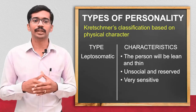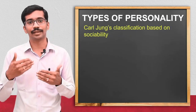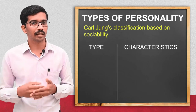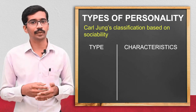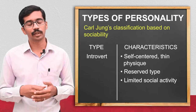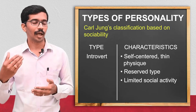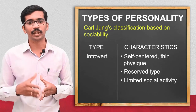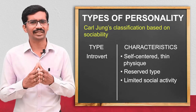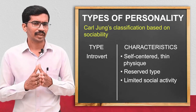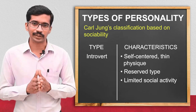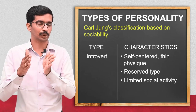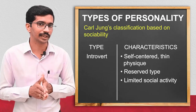Coming to the third classification, based on social relationship or sociality, Carl Jung classified personality into introvert, extrovert, and ambivert. The introvert people are self-centered. They may have a thin physique and will have reserved characteristics with limited social activities.